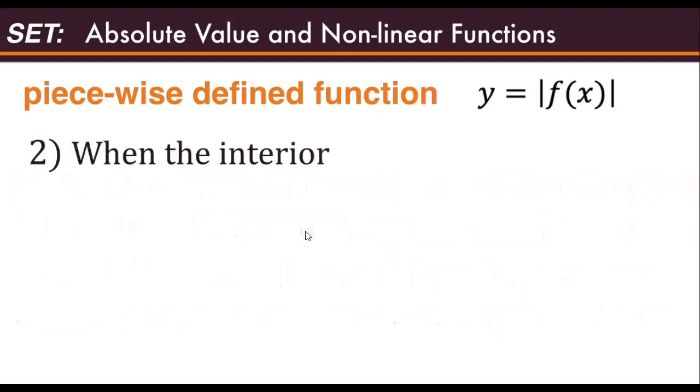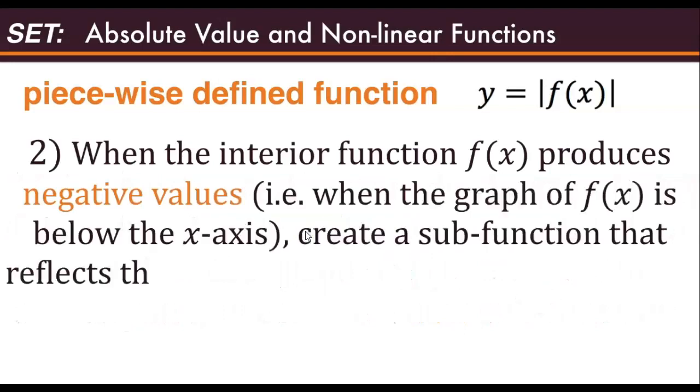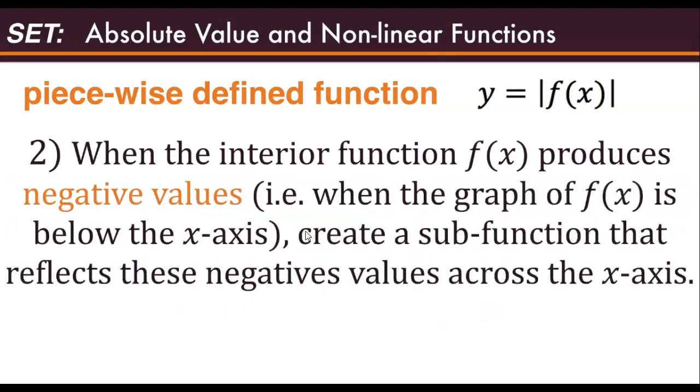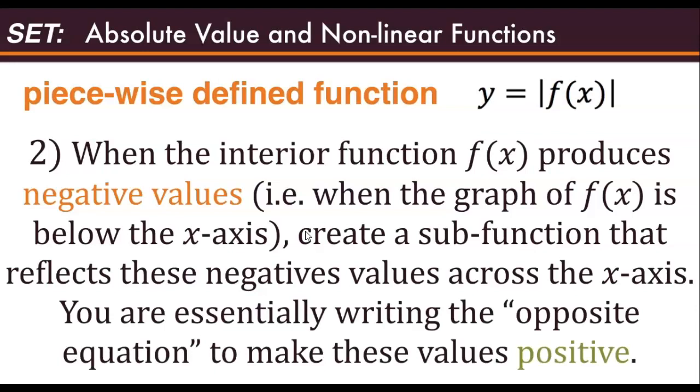The second is when the interior function f produces negative values, for example when the graph of f is below the x-axis. Create a sub-function that reflects these negative values across the x-axis. You are essentially writing the opposite equation to make these values positive.